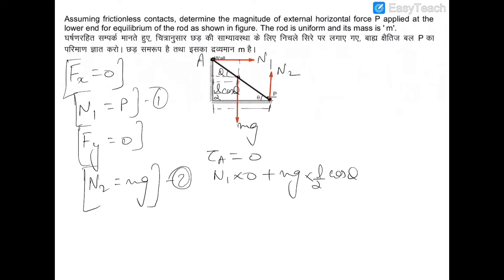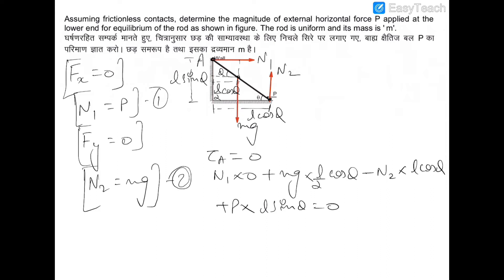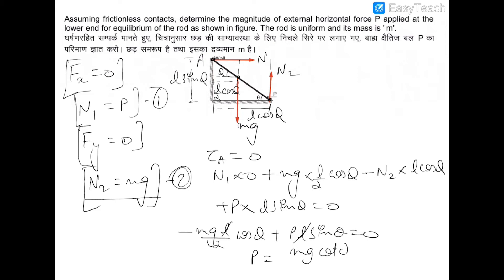Substituting N2 = mg and cancelling L: mg(1/2) cos θ − mg cos θ + P sin θ = 0, which gives −mg(1/2) cos θ + P sin θ = 0, so P = mg cot θ / 2. This is the force required to keep the rod in equilibrium leaning on a frictionless wall and floor.